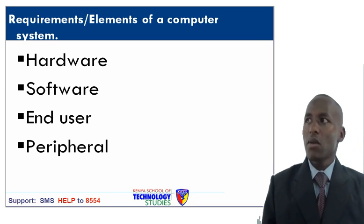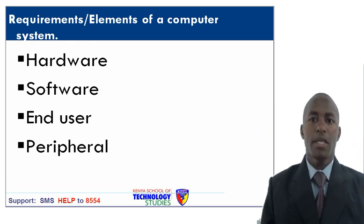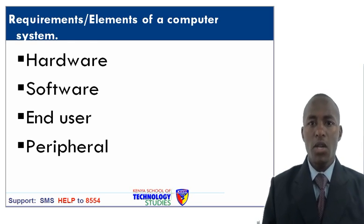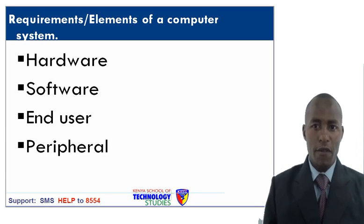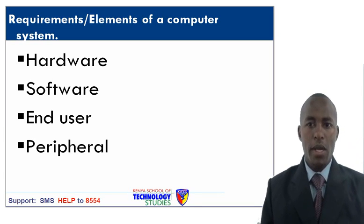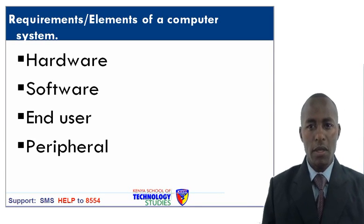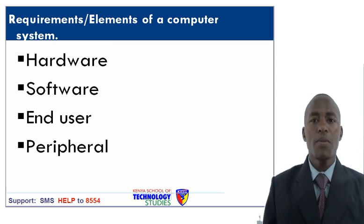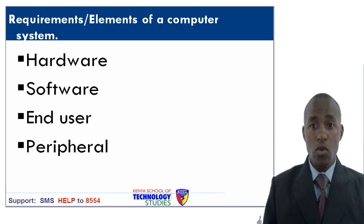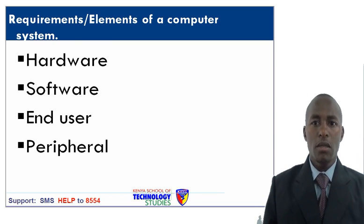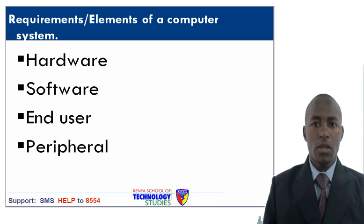Requirements or elements of a computer system. We have four requirements: hardware, software, end user and peripheral. Hardware refers to the physical components of a computer — a very good example is the keyboard and mouse. Software is a set of rules or instructions that govern how the computer operates, for example system software or application software.